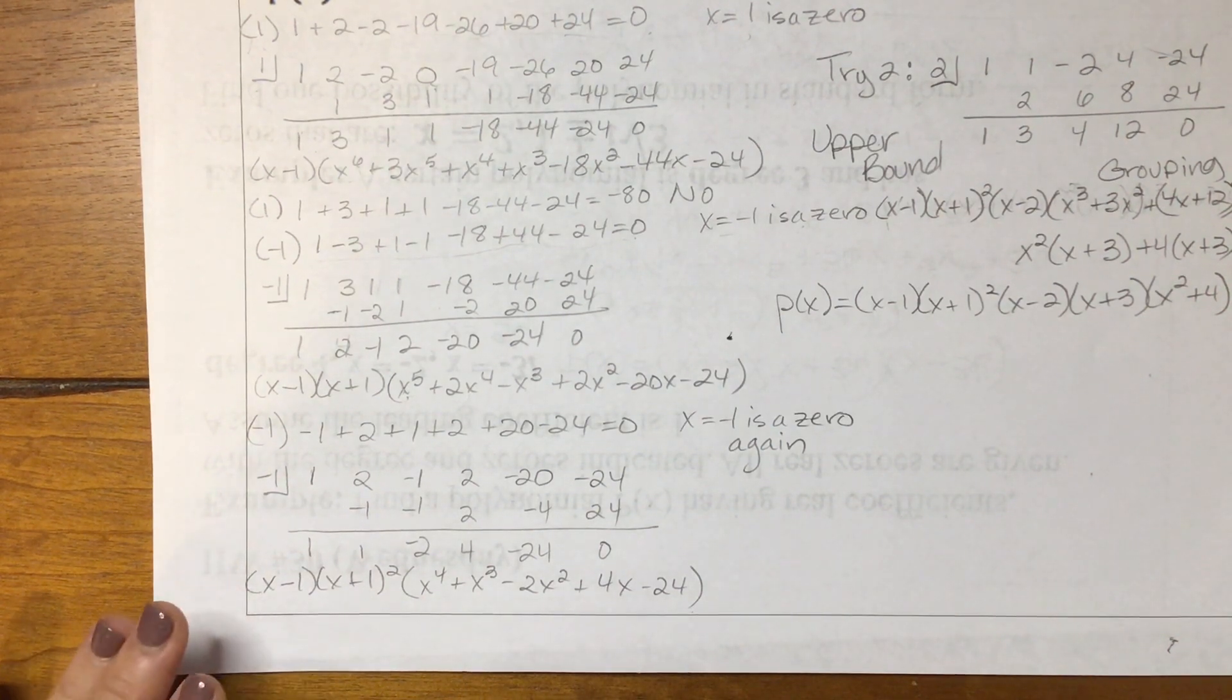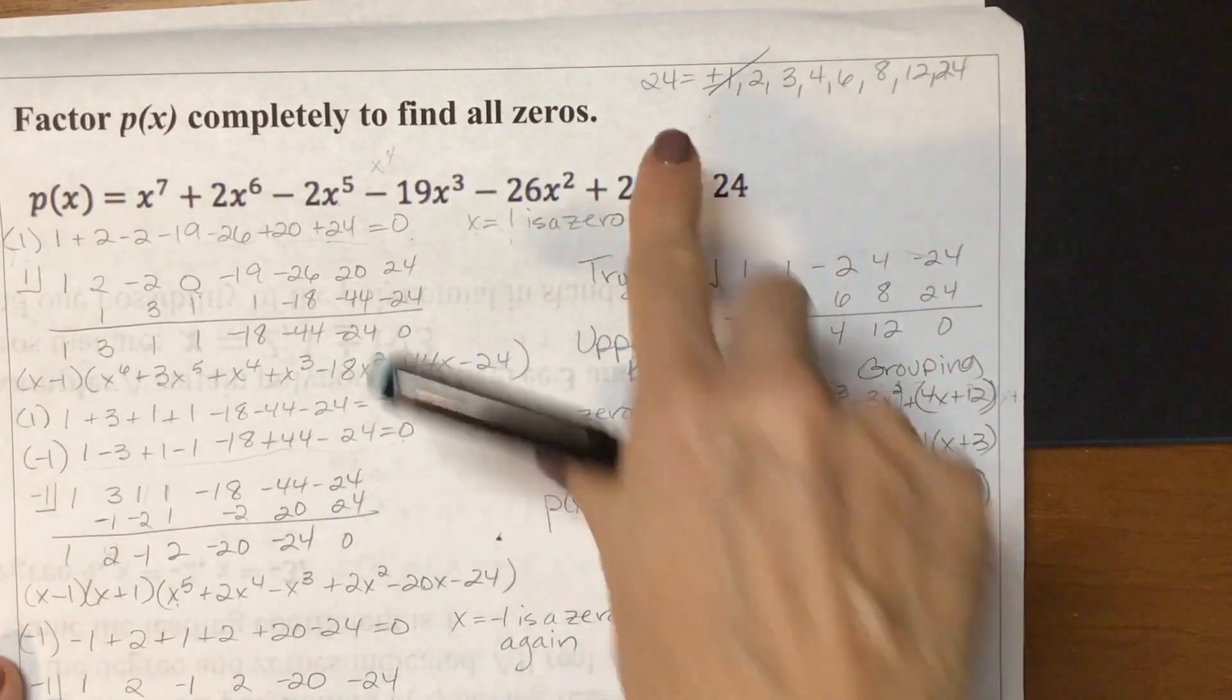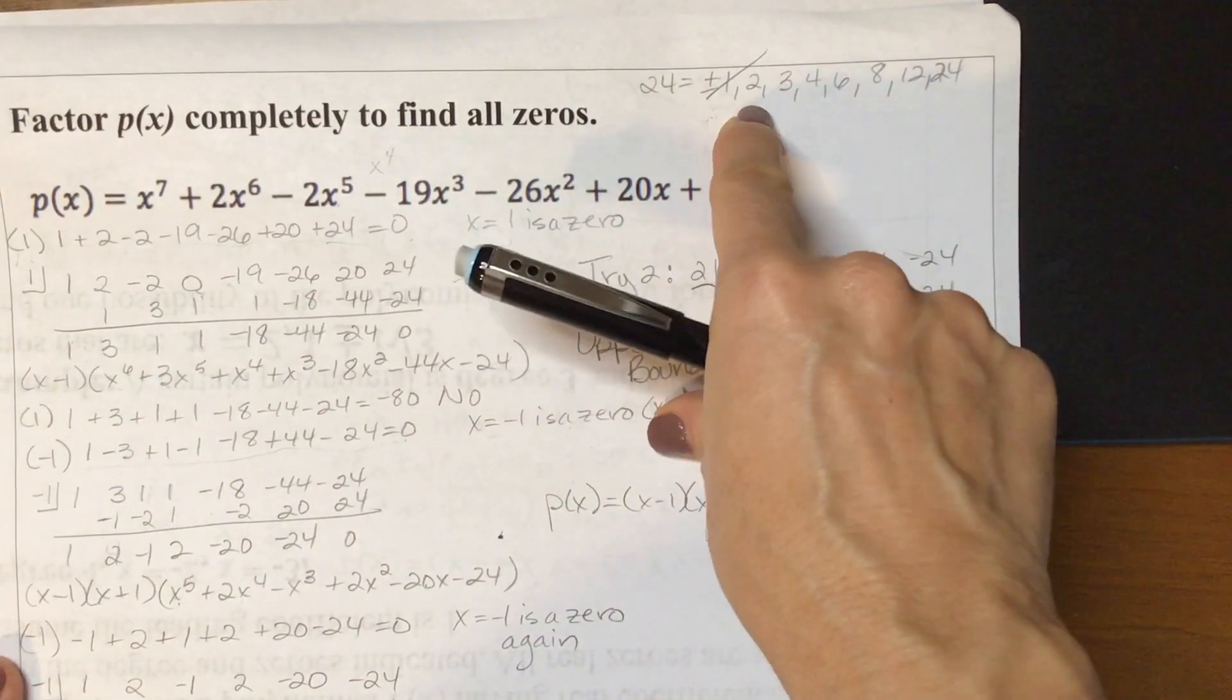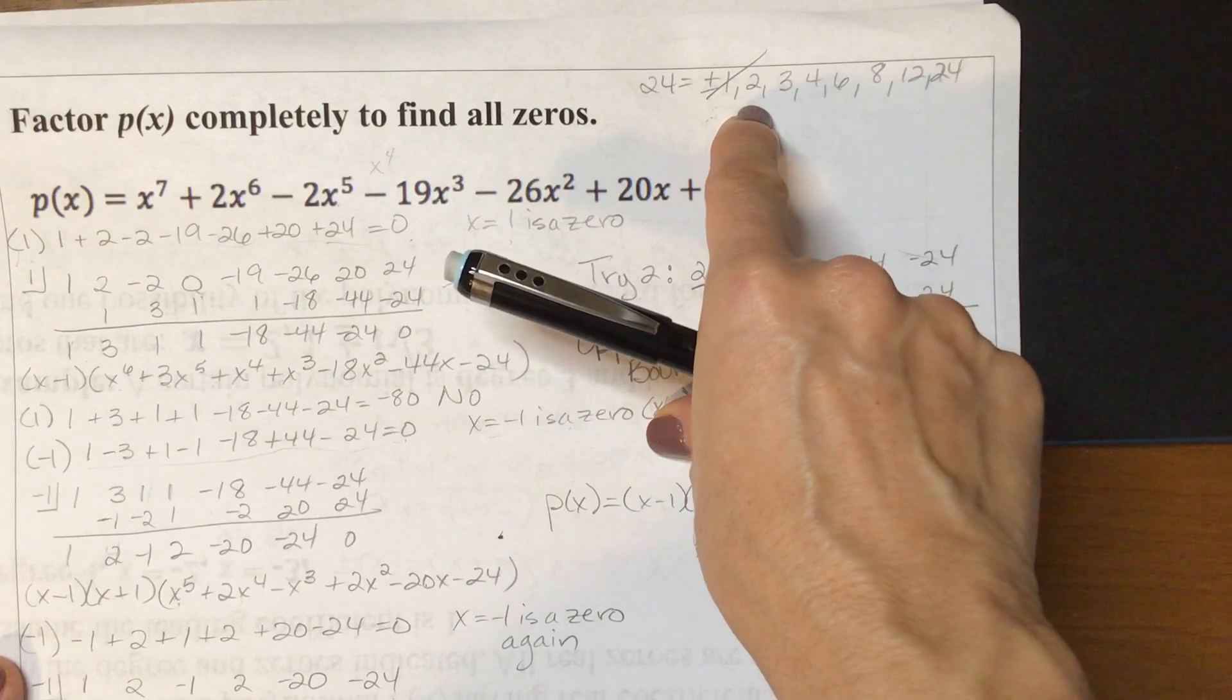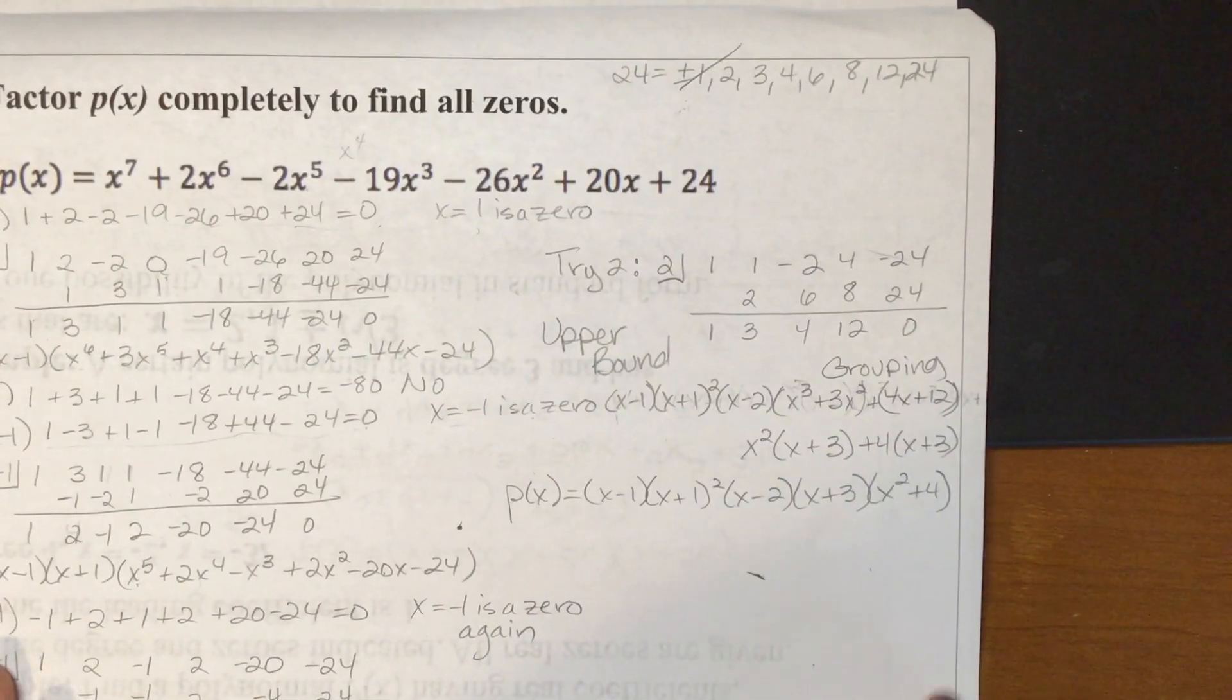And what I didn't show is I did try negative 1 again, and it didn't work. And so when you are done with your 1s, I'm completely done with my 1s, I'm going to go to my next positive number. And that's a 2. And that's what I did here. I tried 2, and 2 worked.